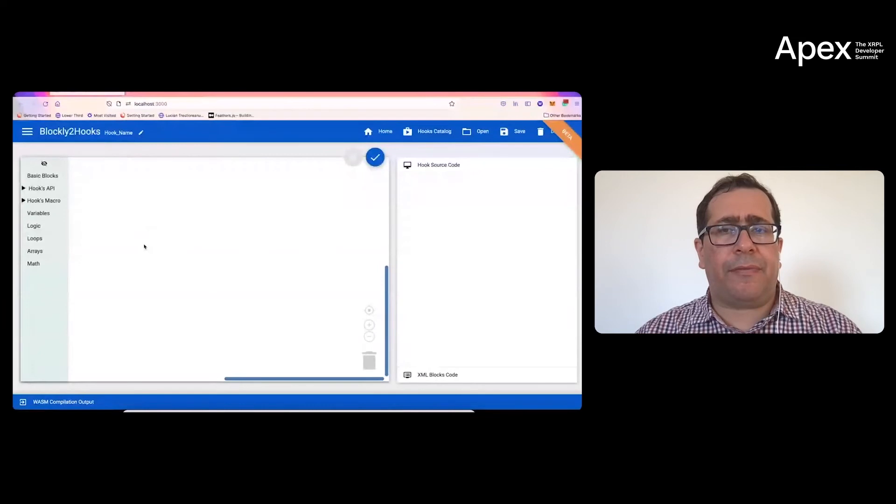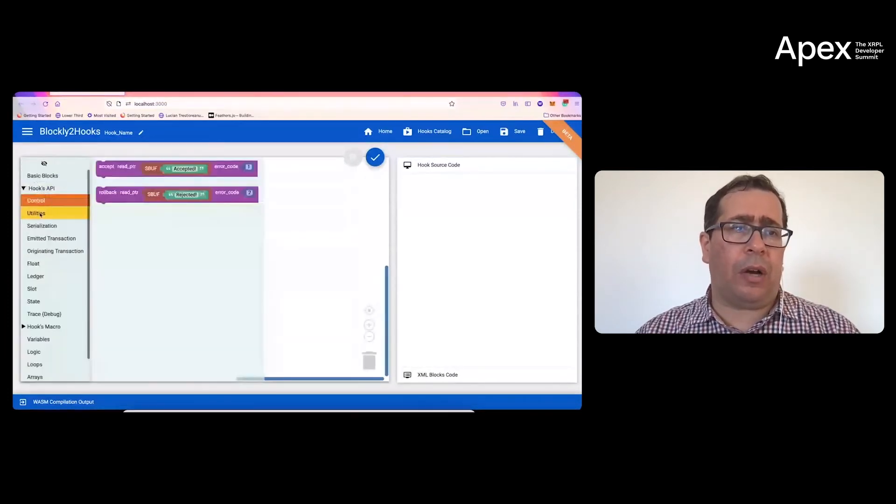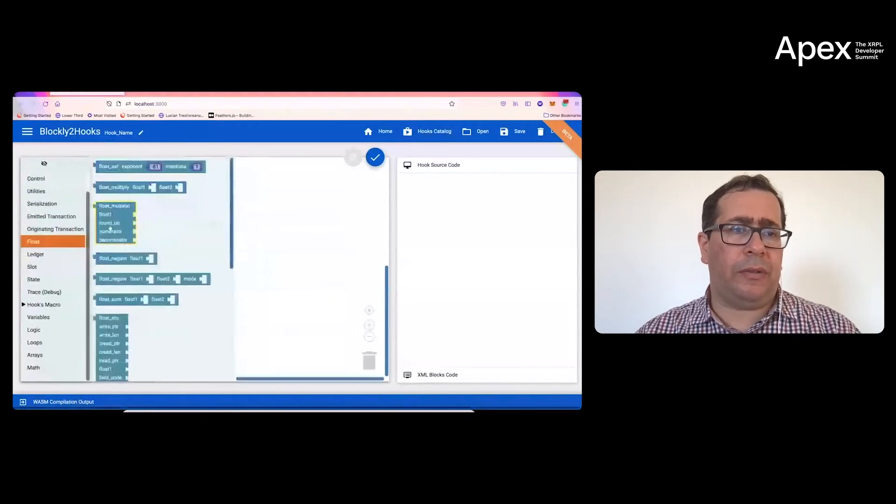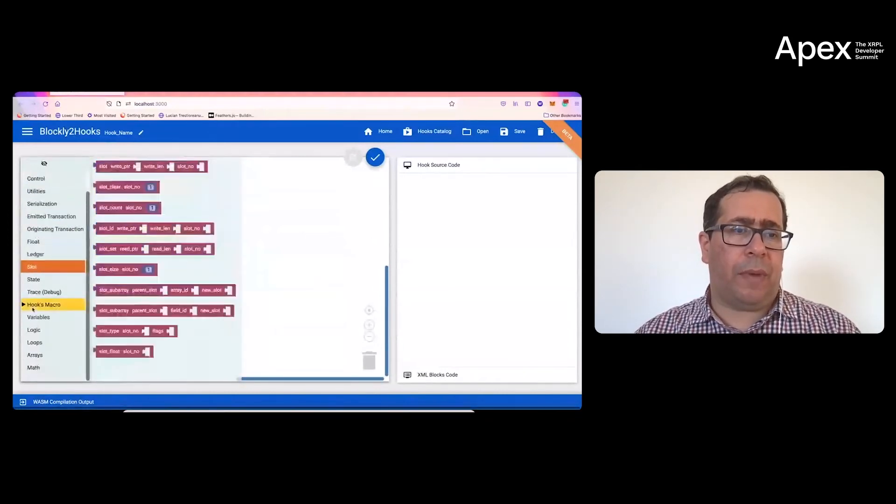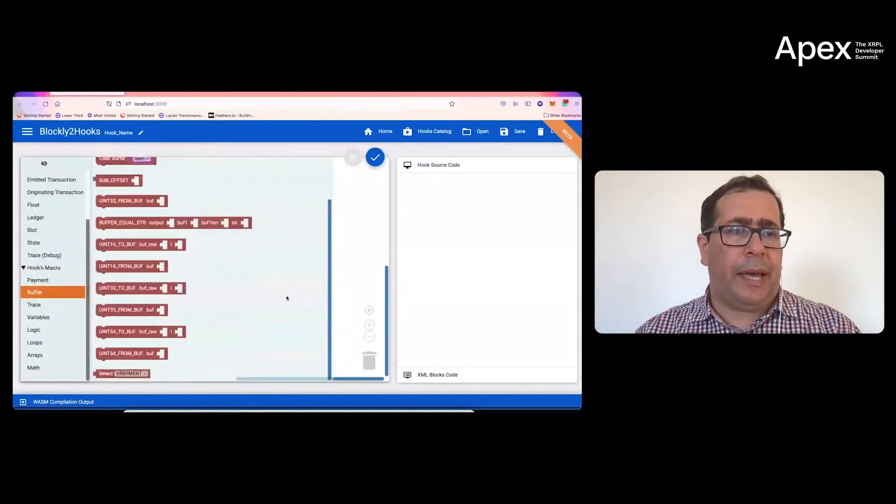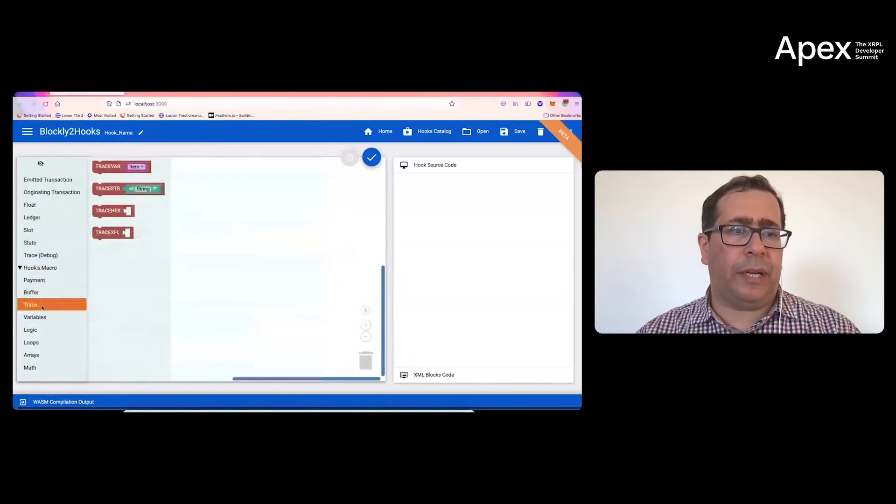This is the front end of Blockly to Hooks. As you can see, we had implemented all the functions of the Hooks, like the API control, in terms of blocks. We have it all here: Hooks macro, payment, buffer. All the things have been translated into blocks.